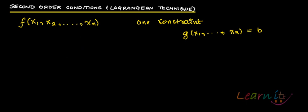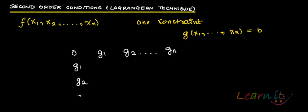So how do you do this? You form the bordered Hessian matrix: you write 0, g1, g2, and so on to gn across the top row and down the first column — g1, g2, ..., gn. All of these are the first-order partial derivatives of the constraint function.